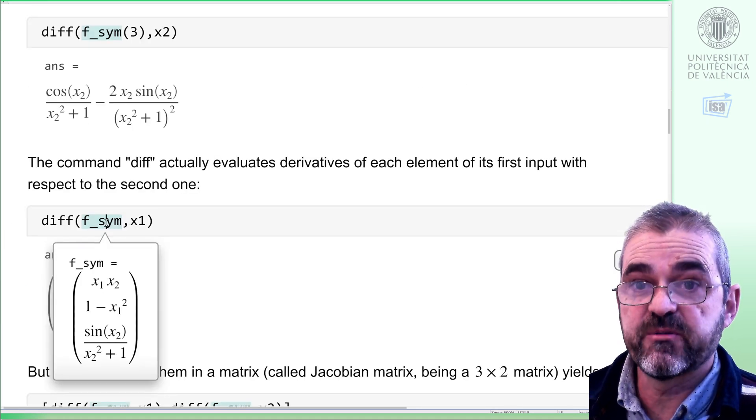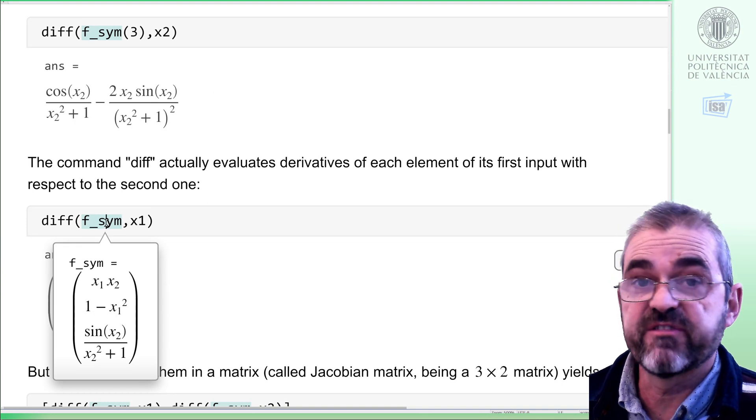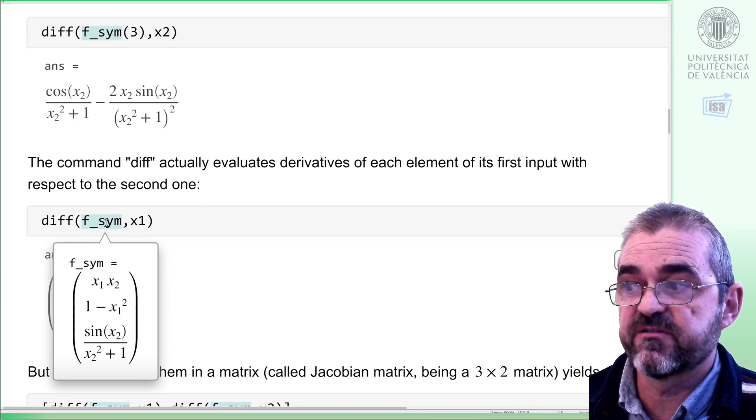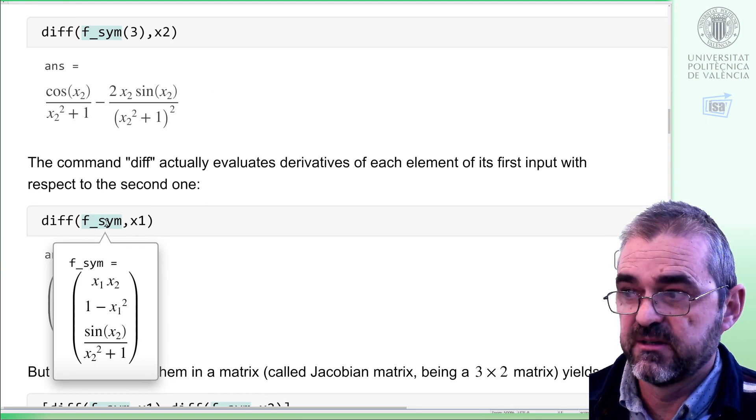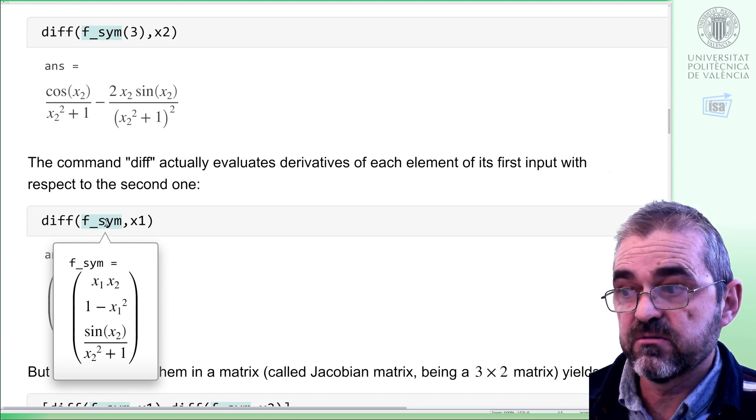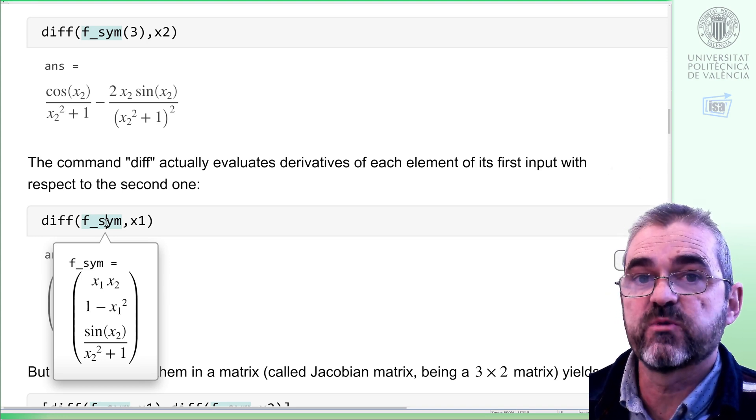If the first argument to diff is a vector of expression, then it takes the derivative of each of them, so if we differentiate all of f_sym with respect to x1, then we get like x2 minus 2x1 and 0, because the last one does not depend on x1.